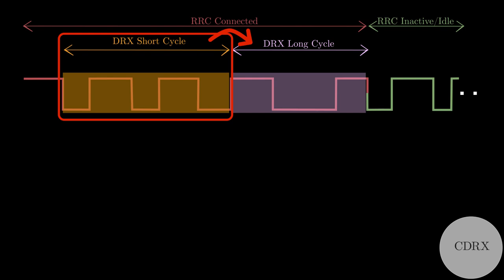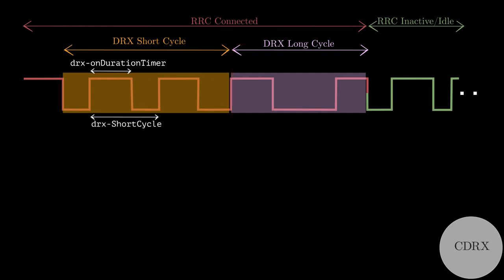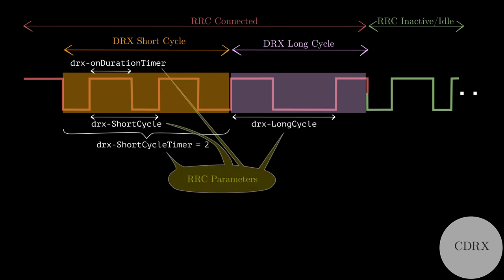The corresponding wake-up time duration is called DRX on Duration Timer and the periodicity is called DRX short cycle. The number of short cycles is called DRX short cycle timer, which is 2 in this example. Correspondingly, the long cycle has a DRX cycle periodicity of DRX long cycle. Note that all these parameters are RRC parameters sent from base station to UE.